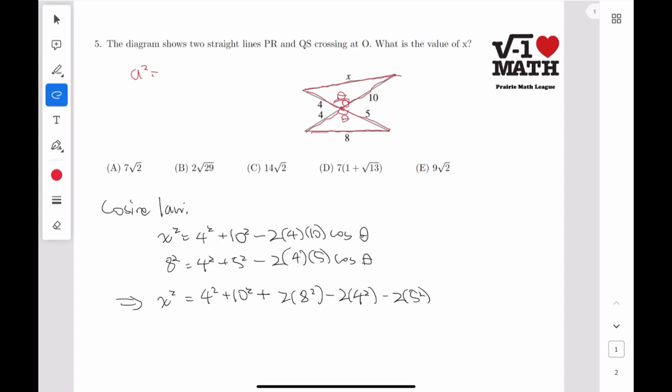which states that a squared equals b squared plus c squared minus 2bc times cosine of the corresponding angle, say a. Or in our case theta, but it doesn't matter. The point is we can write it out for each of these two triangles using theta as our variable here, and theta and x as the two unknown variables in a system of two equations.